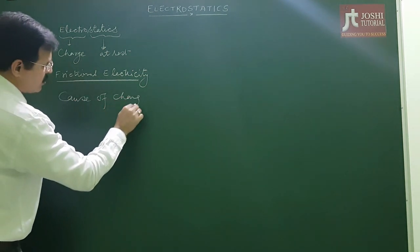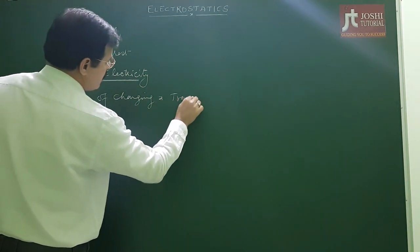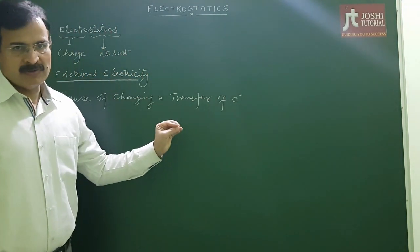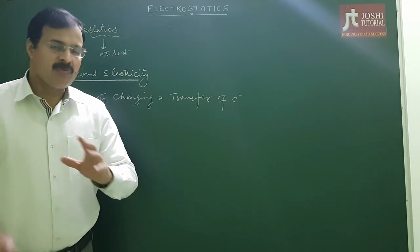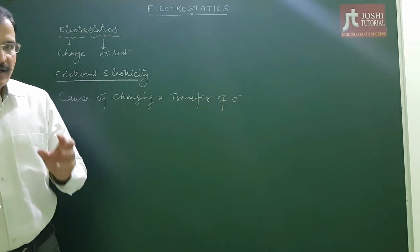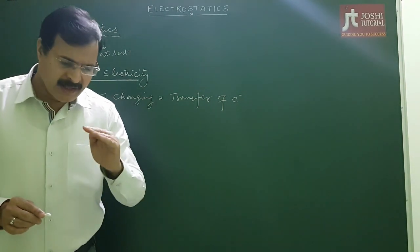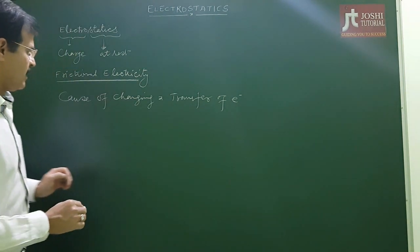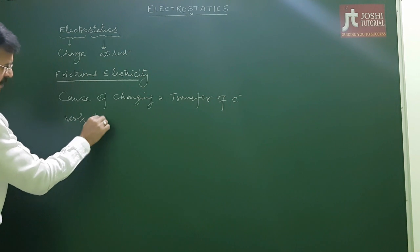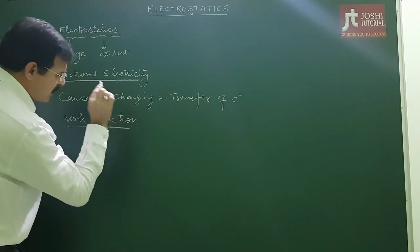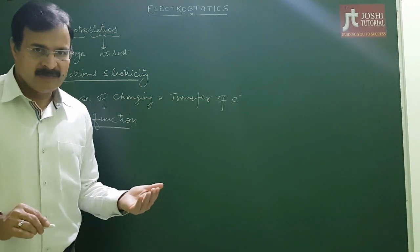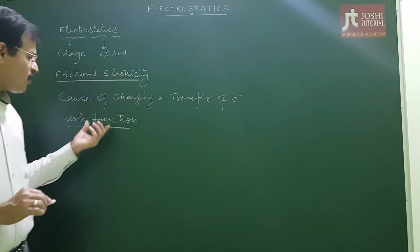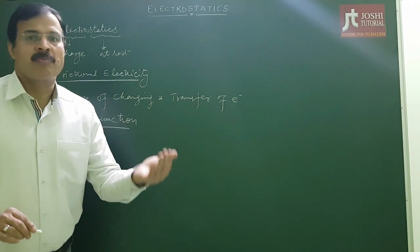The basic cause of charging is simply the transfer of electrons. The next question is: which body loses electrons and which body gains them? To understand that, we have the concept of work function. If a body's work function is less, it will lose electrons more easily and become positively charged. A body with a high work function will gain electrons and become negatively charged.